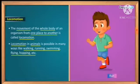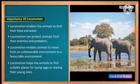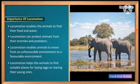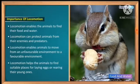Now we will see the importance of locomotion — why do animals need locomotion? First: locomotion enables animals to find their food and water. With the help of locomotion, animals can reach food and water. If they need water they move towards it, if they need food they move towards it. So locomotion helps animals find food and water.